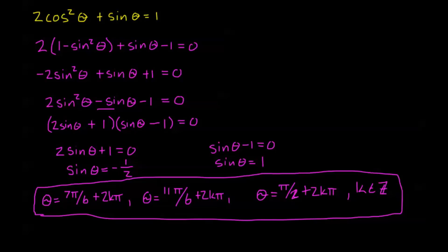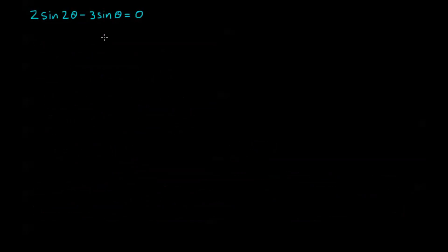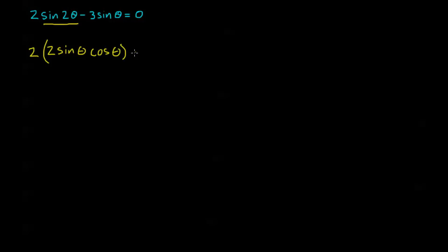Next problem: 2 sine 2theta minus 3 sine theta equals 0. Whenever you see sine or cosine of 2theta, that should signal double angle formulas. I'm going to plug in the double angle formula: sine 2theta equals 2 sine theta cosine theta. So I have 2 times 2 sine theta cosine theta minus 3 sine theta equals 0.